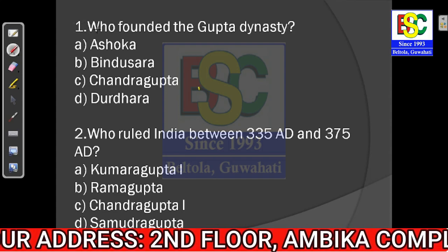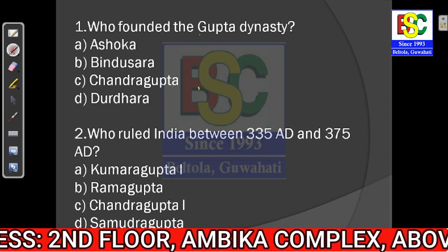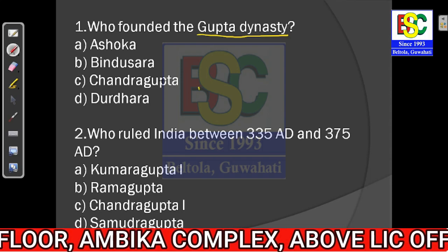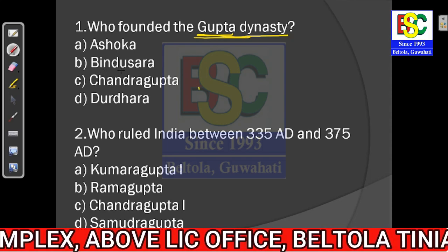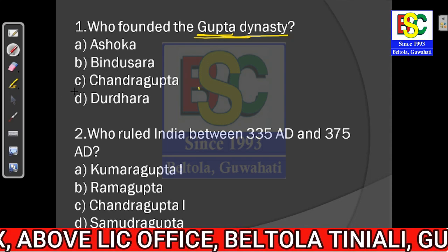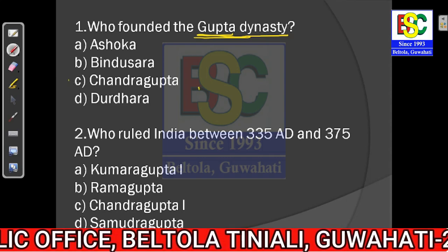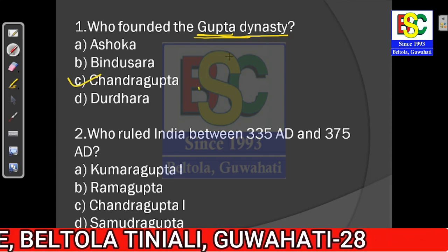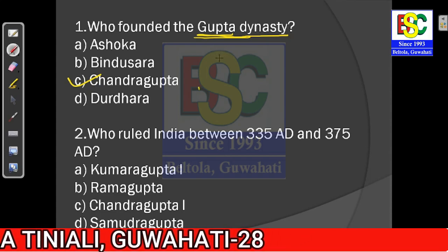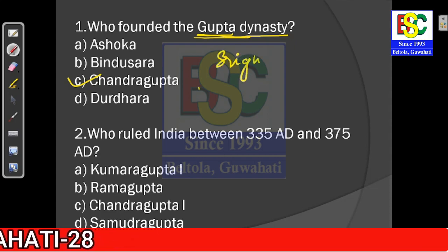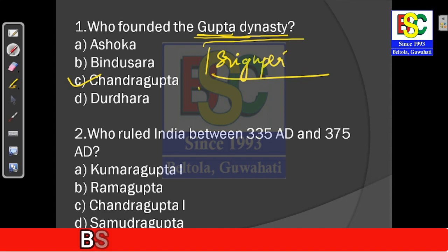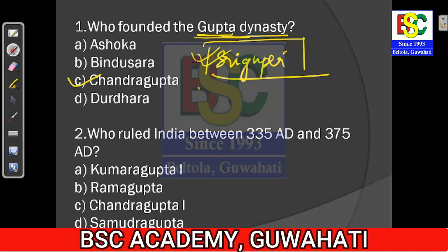Question number one: Who founded the Gupta dynasty? Now they are asking about the Gupta dynasty, not Chandragupta Maurya. Pick option number C — Chandragupta. The Gupta dynasty was actually initiated by a person named Shri Gupta, but if Chandragupta is available as an option in the exam, you should select Chandragupta. The answer for question number one is option C.